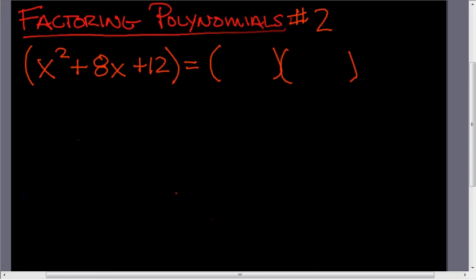From the last video, to get this first term, this had to be the first part of these parentheses multiplied together to get x squared. There's only one way to get x squared, which is x times x. So these first two terms had to be an x and an x.